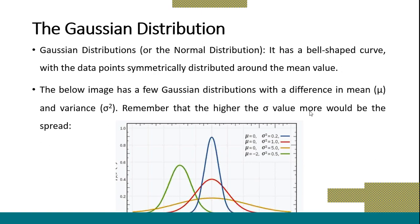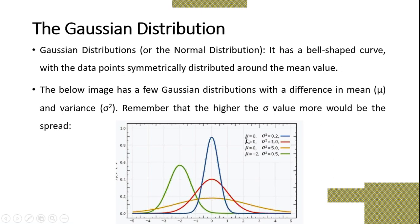In the graph, you can see mu equal to 0 and alpha squared equal to 0.2, indicated by the blue line. Alpha squared equal to 1 is indicated by the red line. Then 5.0 is the golden line and 0.5 is the green line. The higher the alpha squared value — like 5.0 — the more the distribution will be spread out, while lower values like 0.2 produce a higher, narrower peak.